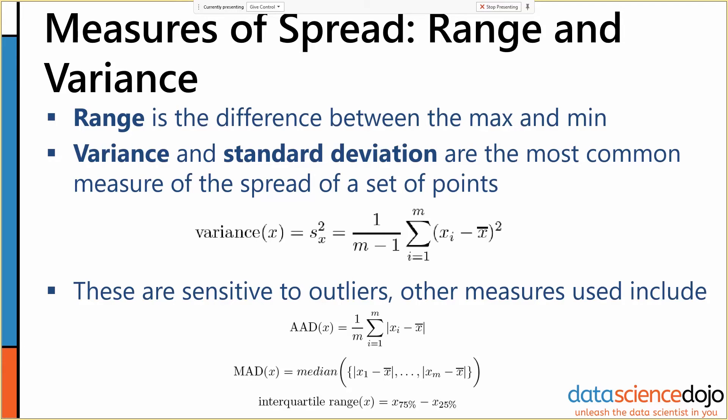Range is the difference between maximum and minimum, which is definitely something we might care about. But range, variance, and standard deviation are all very sensitive to outliers, so there are other measures that we use. We use interquartile range, which is the difference between the 75th percentile value and the 25th percentile value in a set of data.